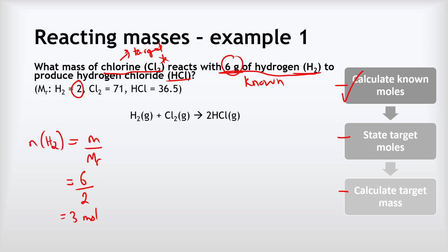Now we need to state the number of moles of our target, Cl2. Looking at the equation, hydrogen and chlorine are in a one-to-one ratio, so if we have one mole of H2 we also have one mole of Cl2. We have 3 moles of H2, so because they're in a one-to-one ratio, we also have 3 moles of chlorine. The number of moles of Cl2 equals the number of moles of H2, which is 3.